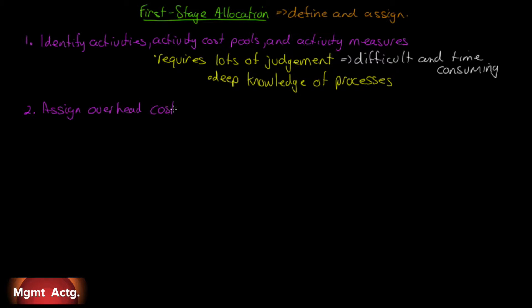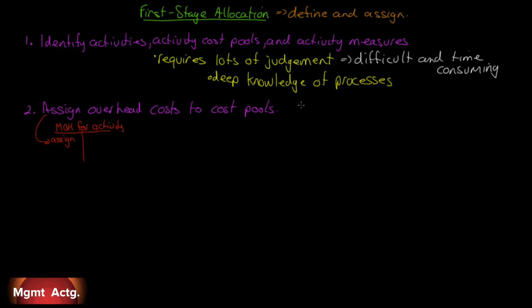Once we've done that, the next step is to assign the overhead costs to the cost pools. Once you have identified your activity cost pools and your activities, you just assign the costs to the cost pools. Think of an activity cost pool as a T-account — a manufacturing overhead account for that activity. There's no journal entry here, but think of it that way. You're assigning costs to these overhead pools. Notice it's going in as a debit because we're assigning. Stage 1 allocation is to assign; Stage 2 is to allocate.